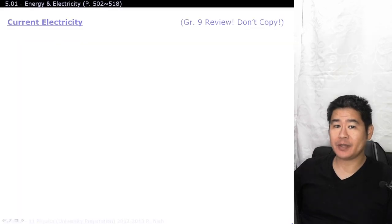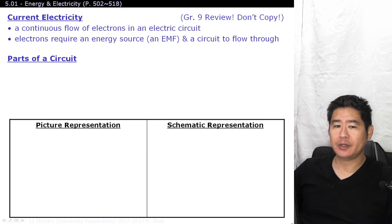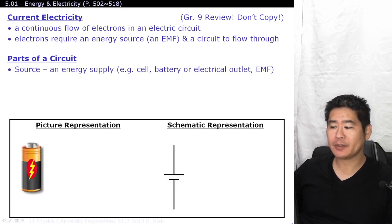Current electricity is defined as a continuous flow of electrons in an electrical path. There are two different ways of representing this: first, as a pictorial diagram, and next, as a schematic diagram.